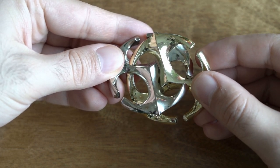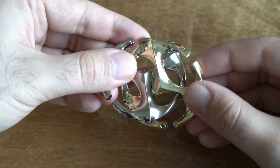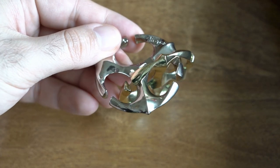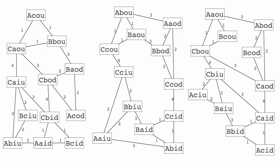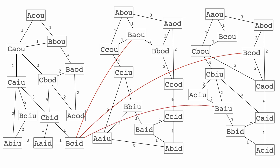So there are three possible states we can reach from this state. What we need to do is identify those states. The first one is B A O U. The second one is B C O D. And the third one is B A I U. And that's it.